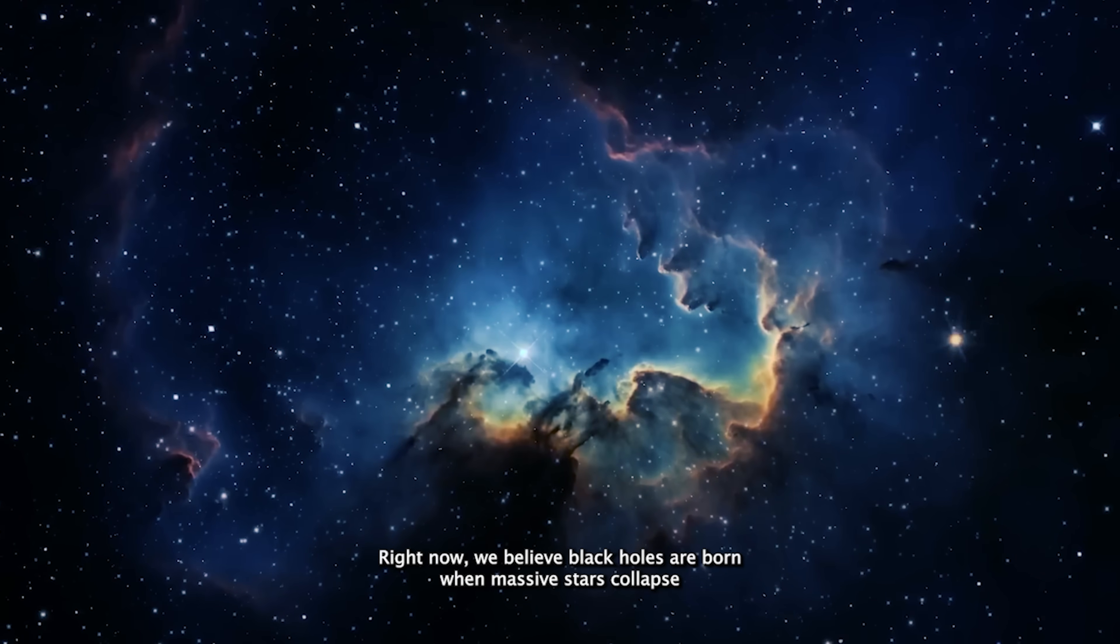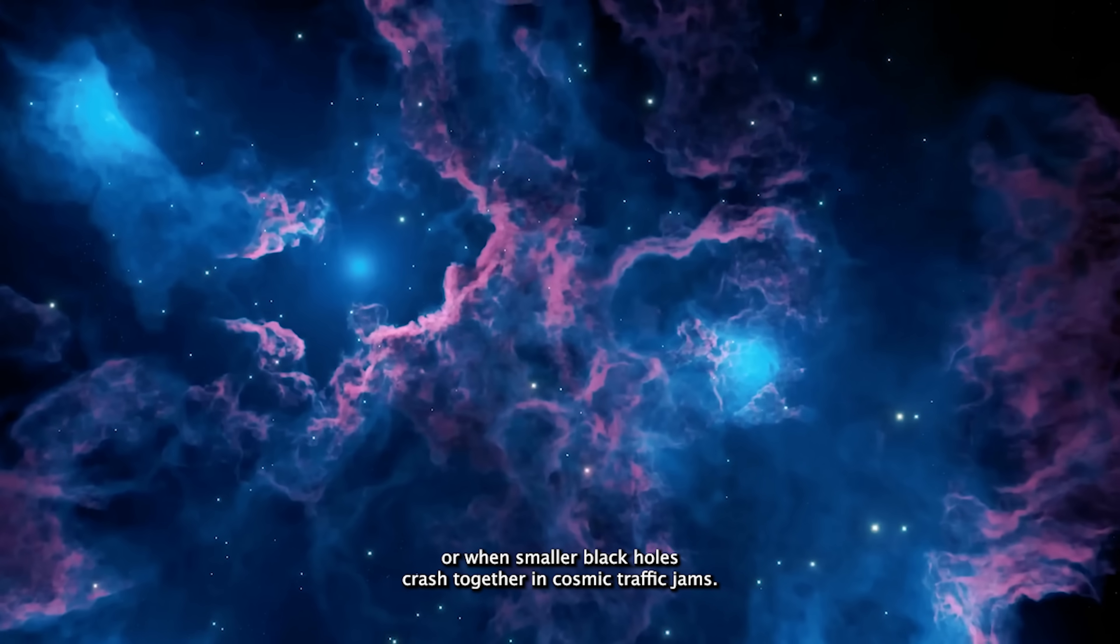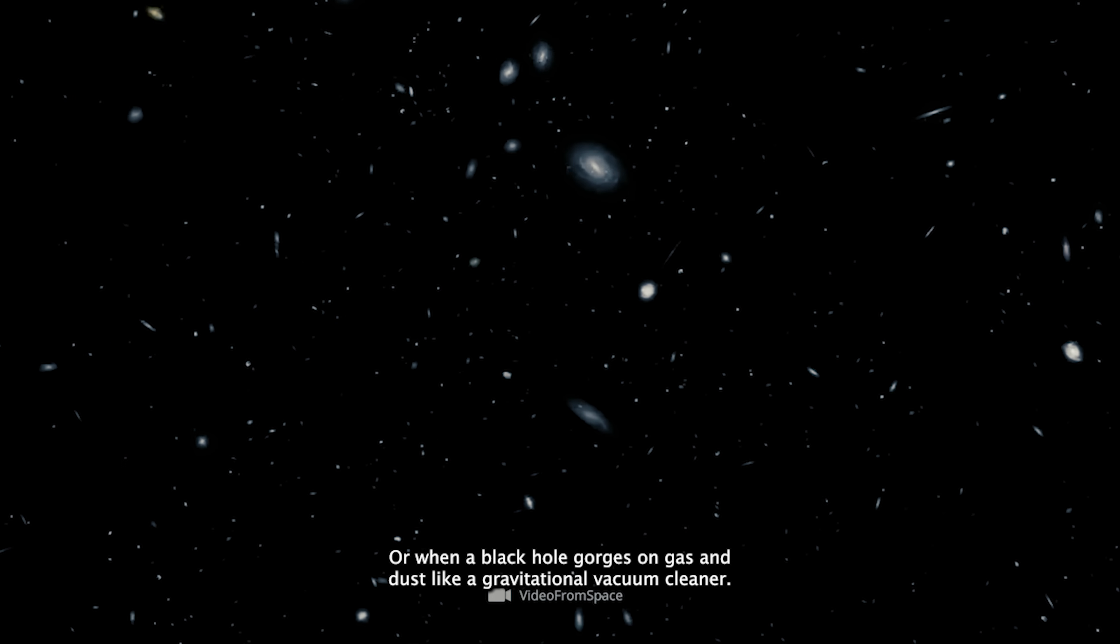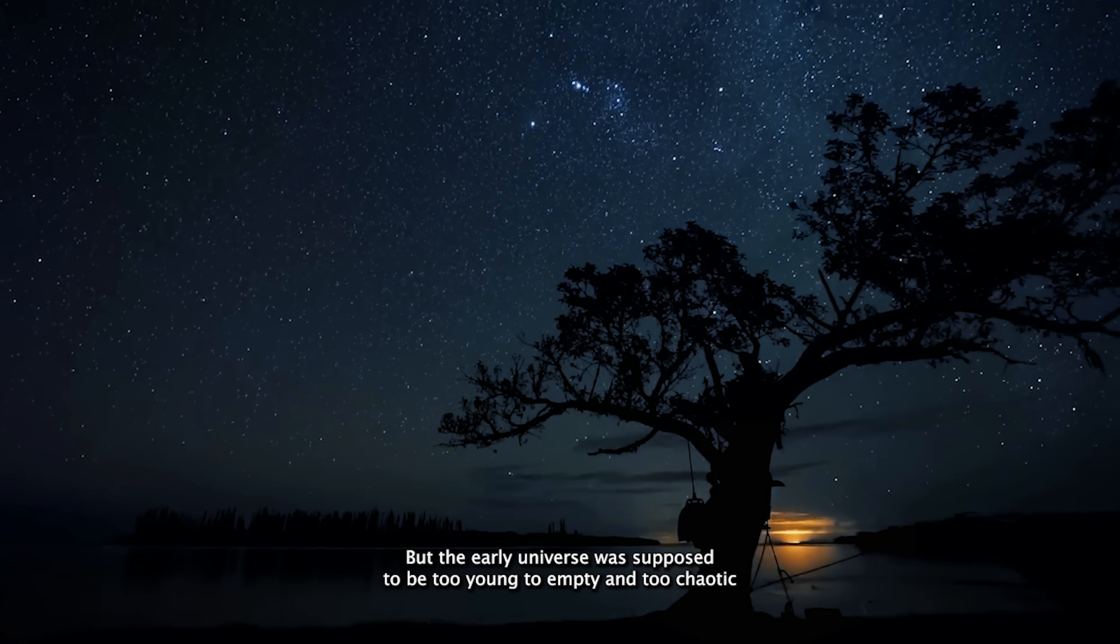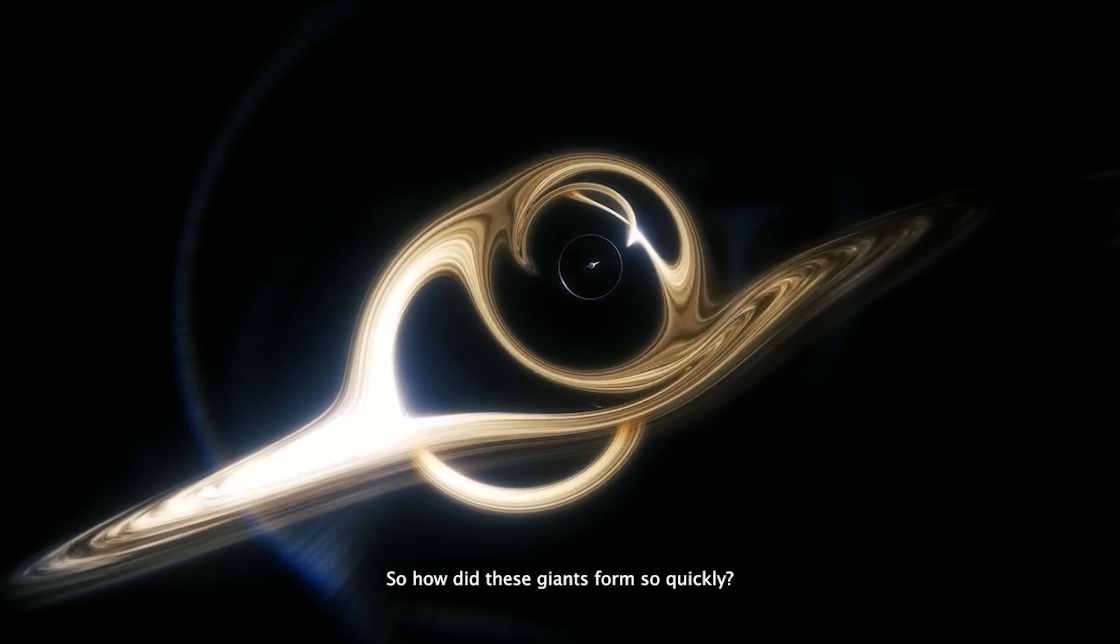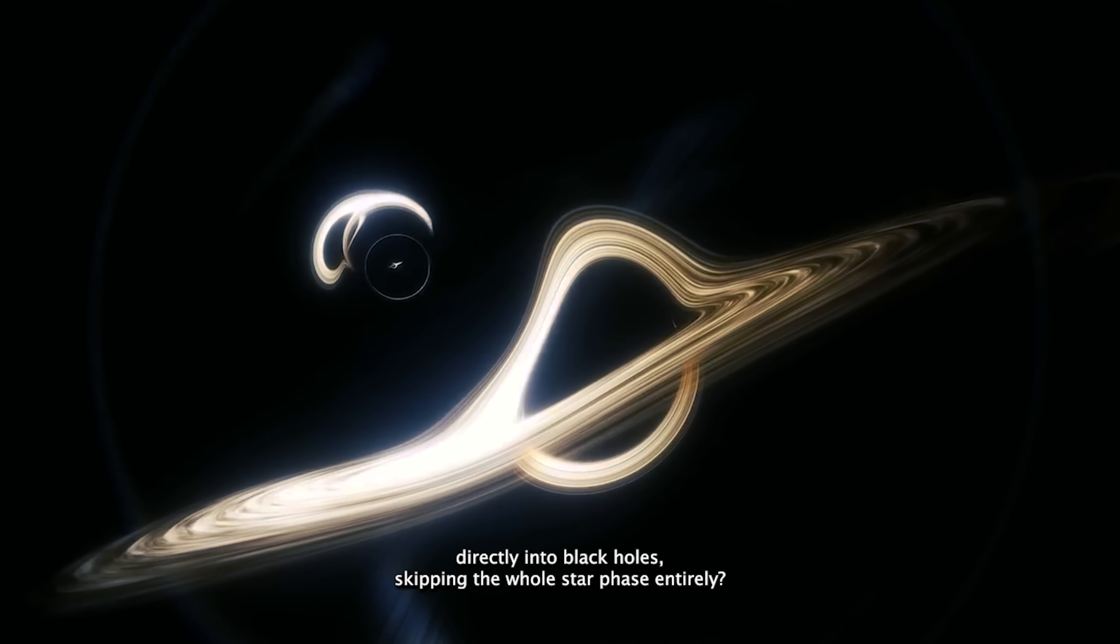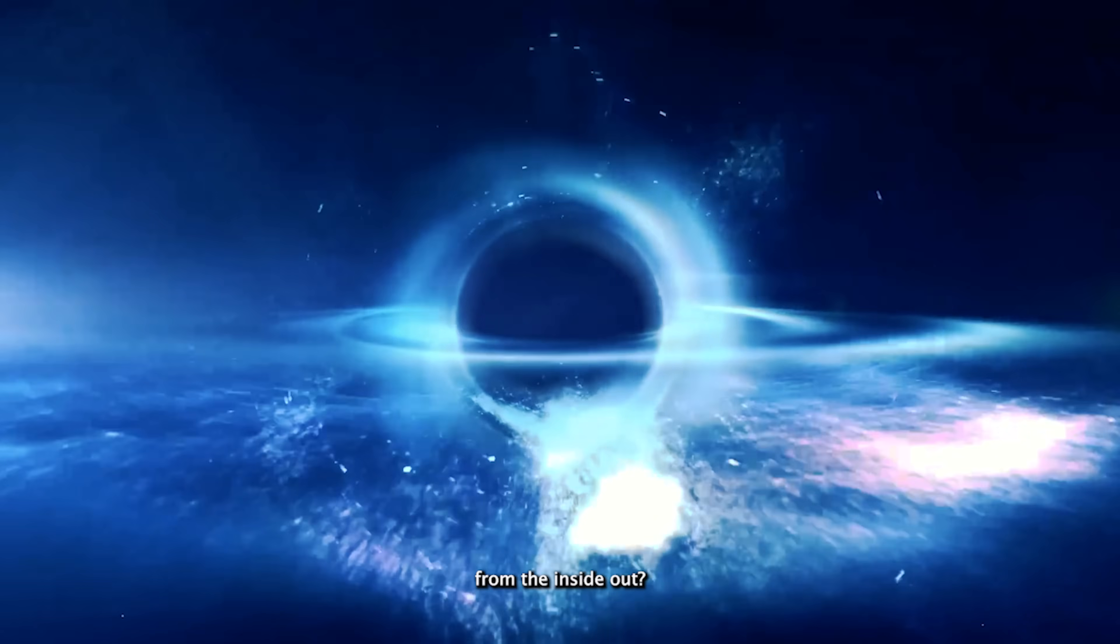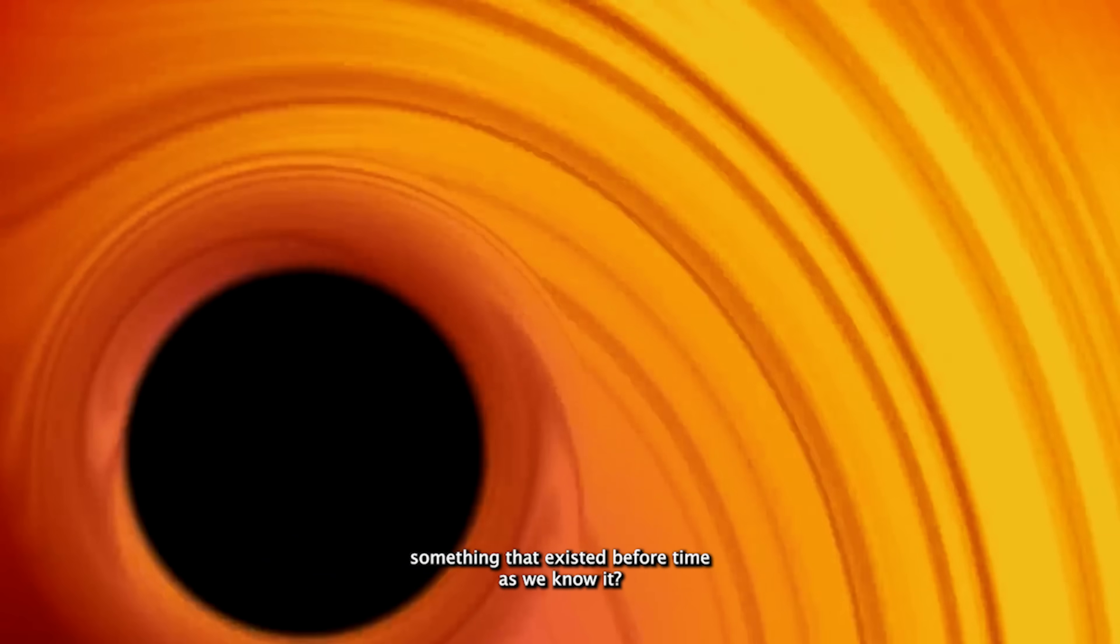Right now, we believe black holes are born when massive stars collapse, or when smaller black holes crash together in cosmic traffic jams, or when a black hole gorges on gas and dust like a gravitational vacuum cleaner. But the early universe was supposed to be too young, too empty, and too chaotic for that kind of growth. So how did these giants form so quickly? Could clouds of gas collapse directly into black holes, skipping the whole star phase entirely? Could they have pulled early stars toward them and shaped galaxies from the inside out? Or are we staring into the shadows of something even bigger? Something that existed before time as we know it?